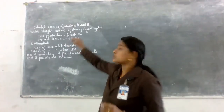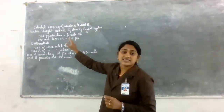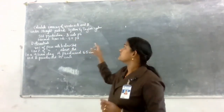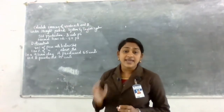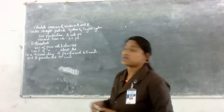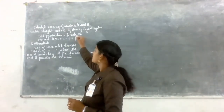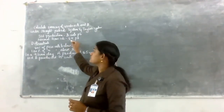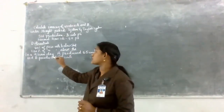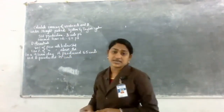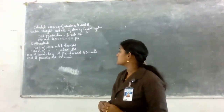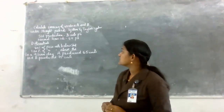Now we calculate earnings of workers A and B under straight piece rate system and Taylor's differential piece rate system. Standard production is 8 units per hour, normal time rate is 40. Differentials to be applied: 80% of the piece rate below standard, and 120% of the piece rate above standard. In a 9-hour day, A produces 65 units and B produces 75 units.